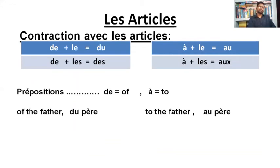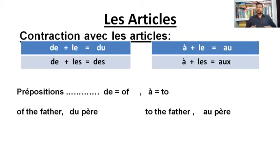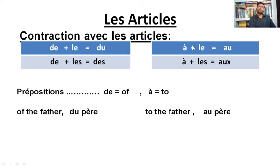For example, if you want to say 'of the father,' you say 'du père' — rather than saying 'de le père,' you just say 'du père.' Similarly, if you want to say 'to the father' — something is given to the father — you use 'au père.' Rather than saying 'à le père,' you just use 'au père.'